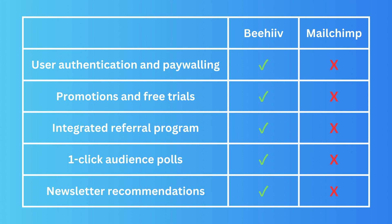Premium subscriptions are not available in Mailchimp, and neither is user authentication and paywalling. For example, if you have expertise about the stock market, you could send one free recap email and paywall a second more in-depth email. Beehiiv lets you do that, which is a really nice function for monetizing your content.